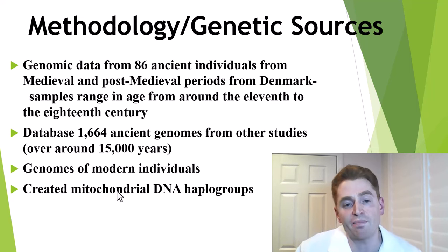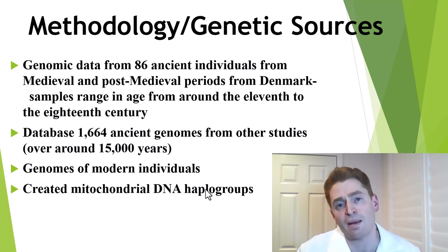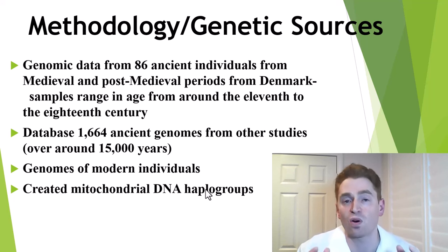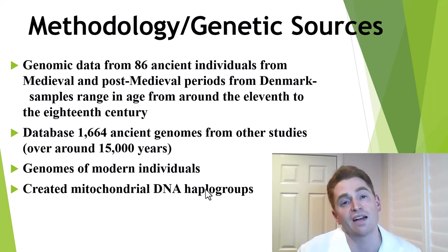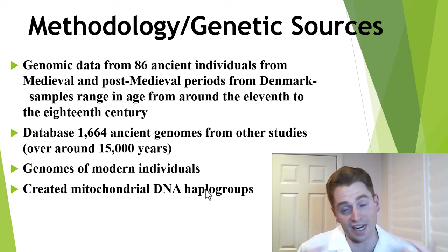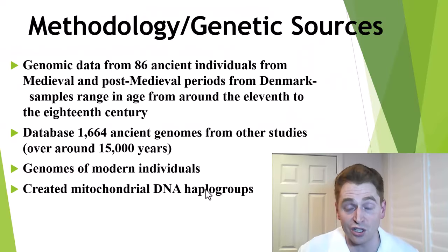They also looked at genomes of modern individuals. Then they created mitochondrial DNA haplogroups — mitochondrial DNA is inherited asexually only through your mother, which makes it much simpler than chromosomal evolution and helps for creating family trees. You can also see this on your 23andMe report. I must admit this article was way over my head as a medical doctor, not a geneticist or statistician, so I'm trusting that their methodology and accuracy are sound.